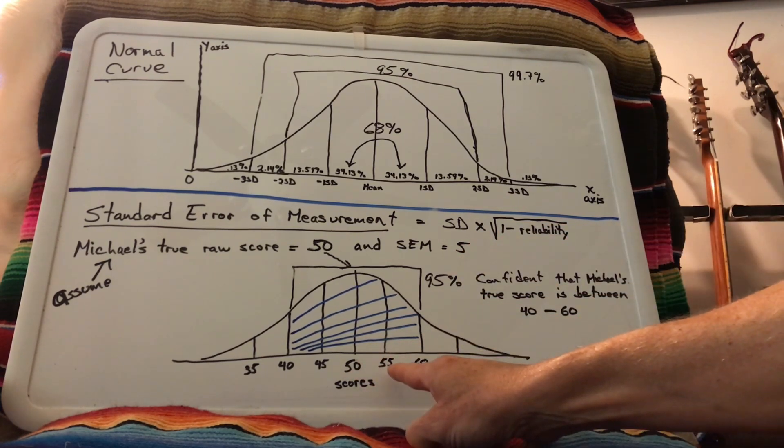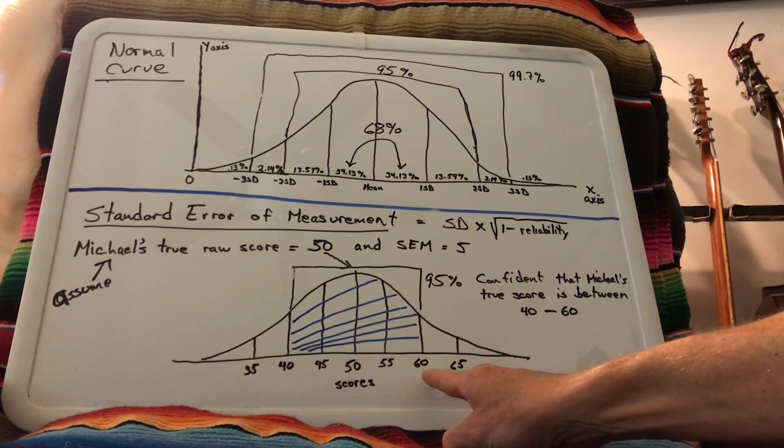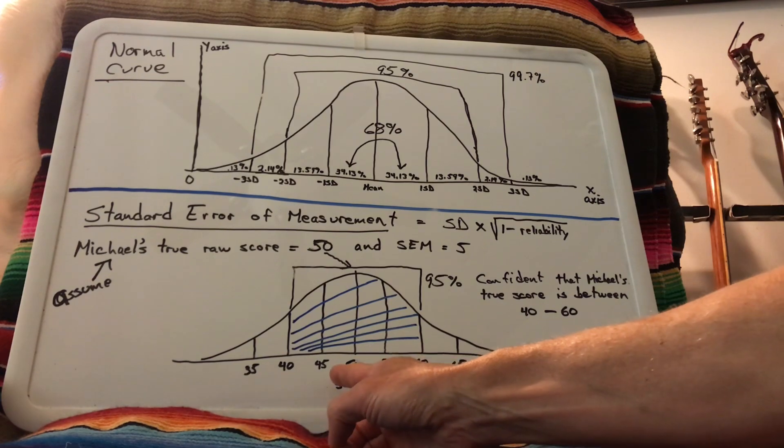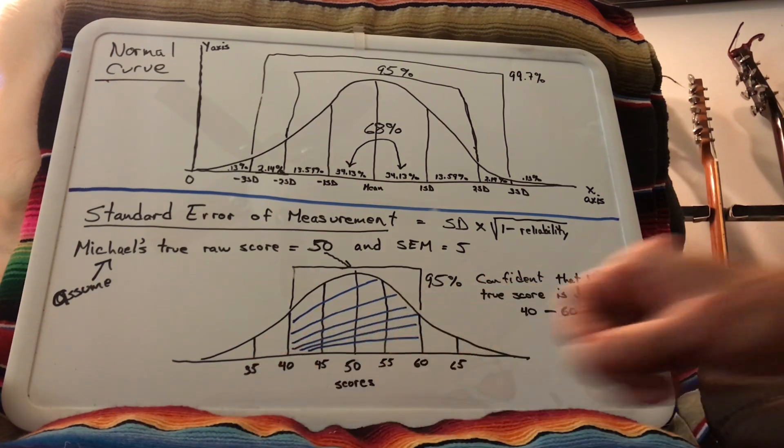So one SEM above would be 55, two SEMs above would be 60, and then 65 would be three SEMs. And then you can see we've just gone down. Minus one SEM, 45, 40, 35.